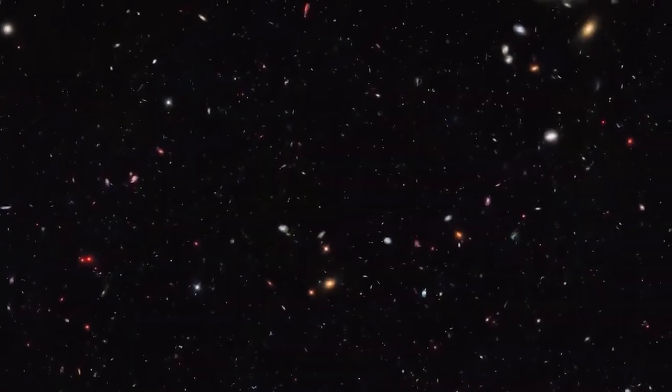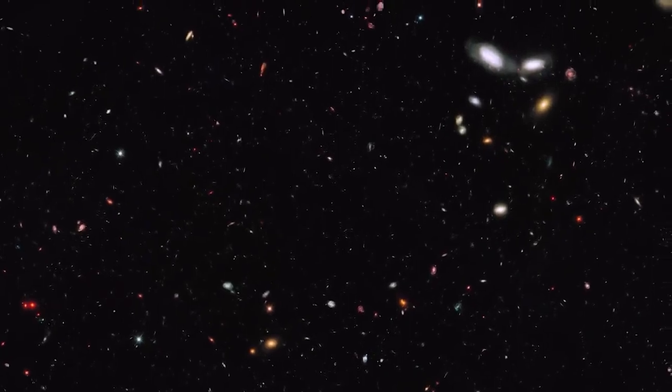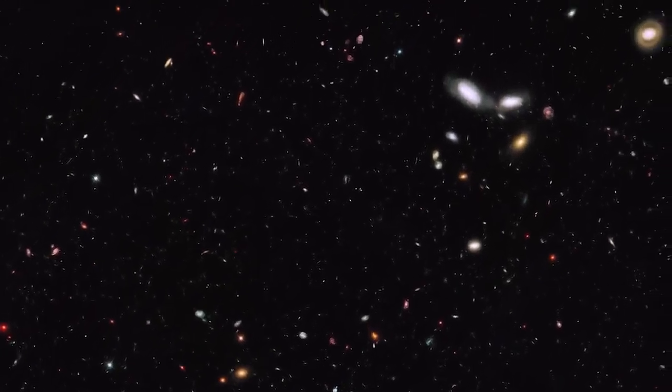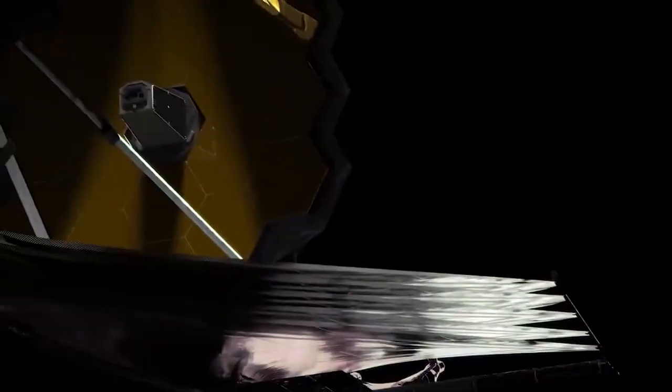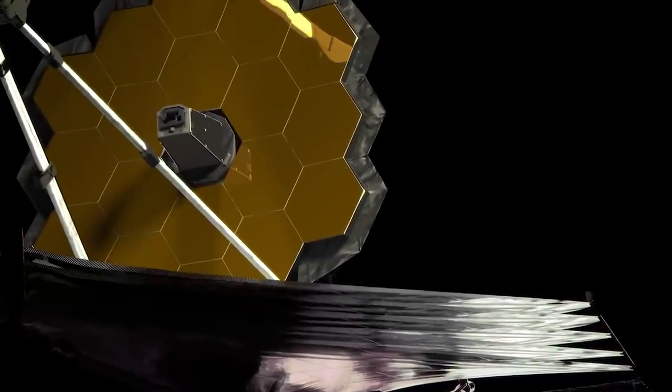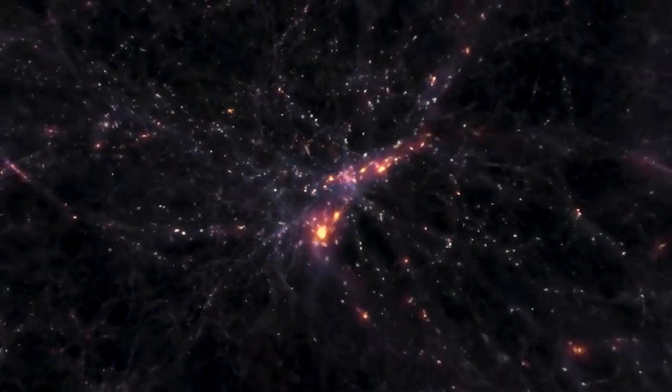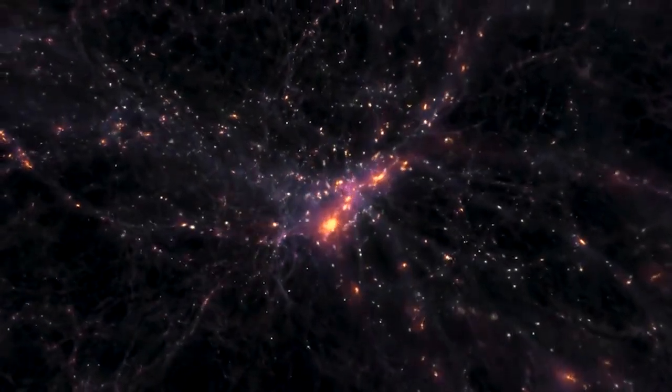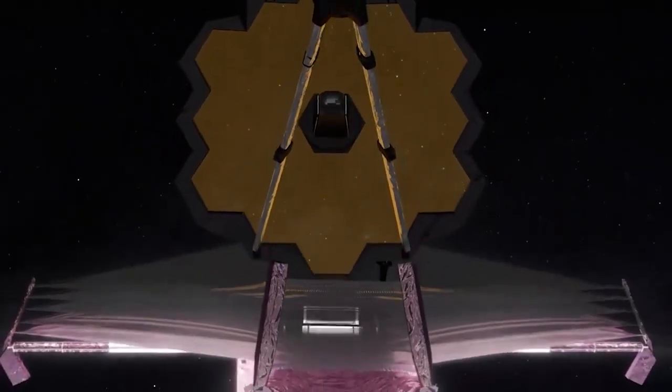The existence of such galaxies, observed as they were just a few hundred million years after the Big Bang, completely change our understanding of early galaxy formation and the universe's age. The JWST's unique capability to capture the faint, red-shifted light from these galaxies enabled us to view the universe as it existed shortly after the Big Bang. This feature places the JWST at the forefront of cosmic discovery.